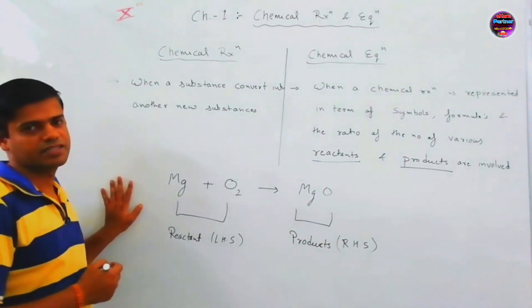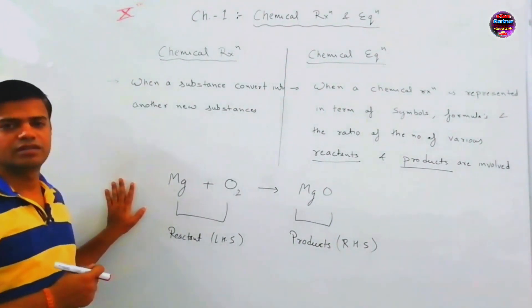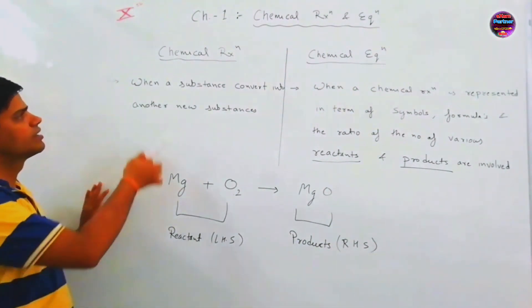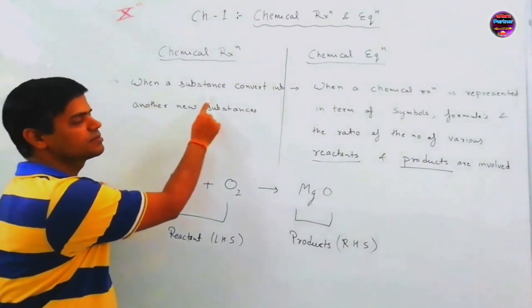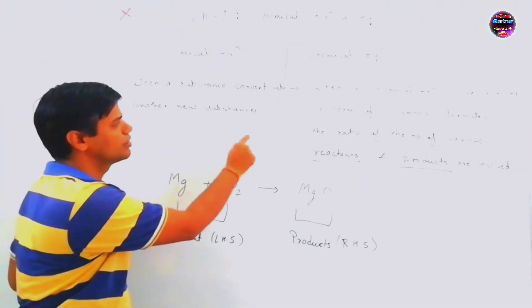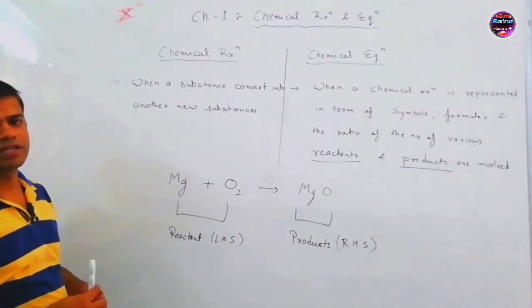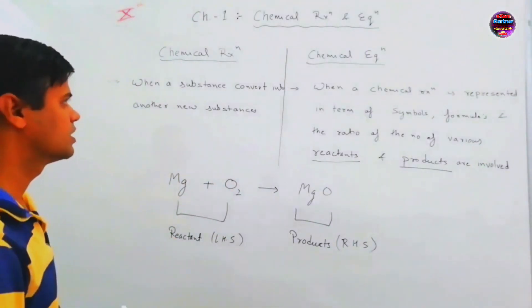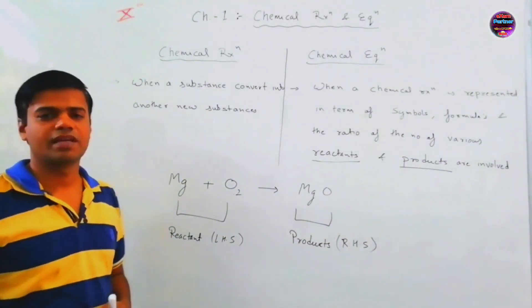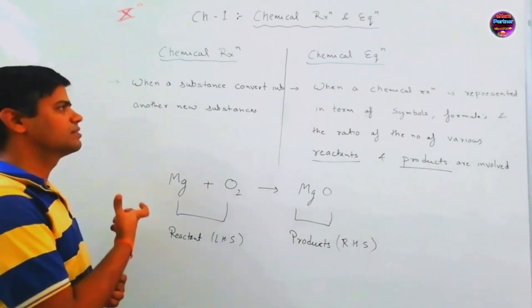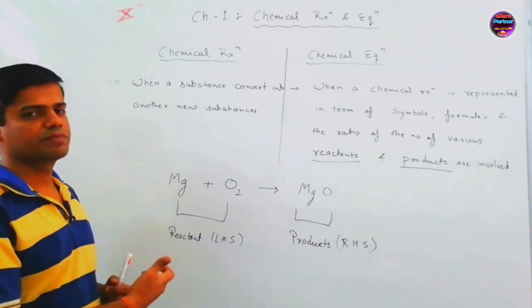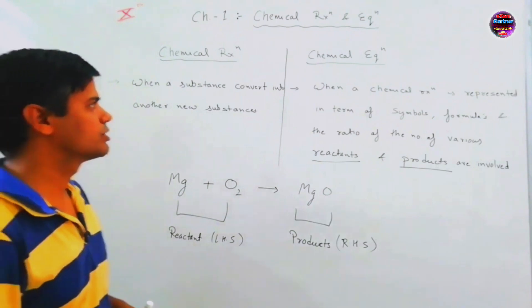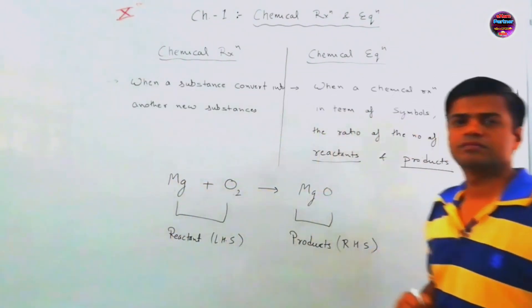Next, chemical reaction and chemical equation, differentiate therein. Chemical reaction, when a substance converted into another new substance, is called as chemical change or chemical reaction. While chemical equation, this is the chemical reaction which is symbolic representation, which is called chemical equation.